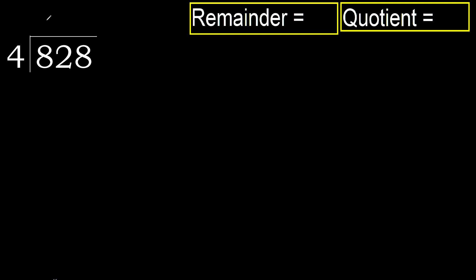828 divided by 4. 8 is not less, therefore with 8: 4 multiplied by which number is nearest to 8 but not greater? 4 multiplied by 3 is 12, which is greater. 4 multiplied by 2 is 8, which is not greater. Subtract 8 minus 8 equals 0.